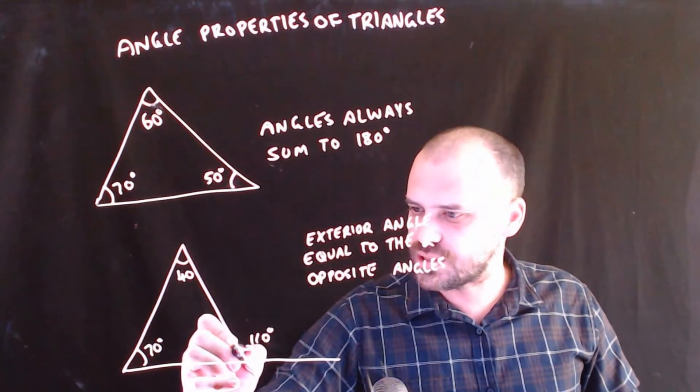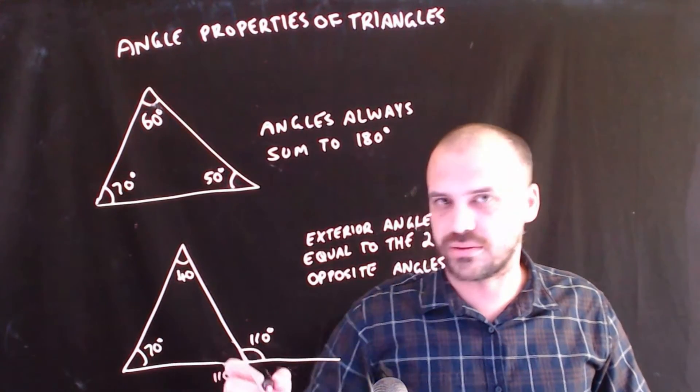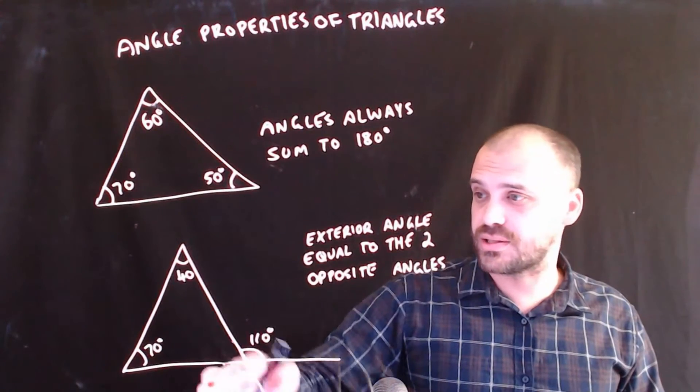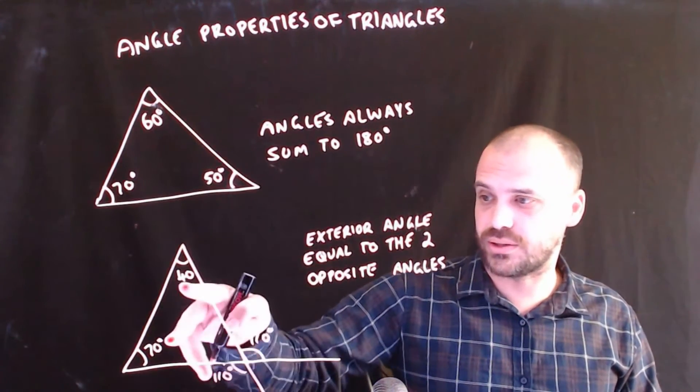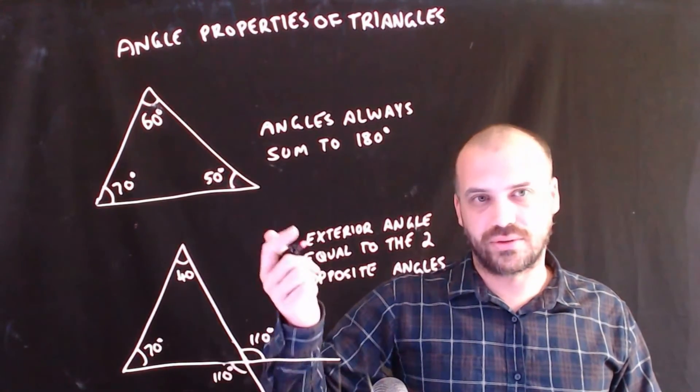If I was to draw this line down here instead, this would also be 110 degrees. This would be the exterior angle, and it would be the sum of these two as well. And it's obvious why that would be the case because these two are vertically opposite.